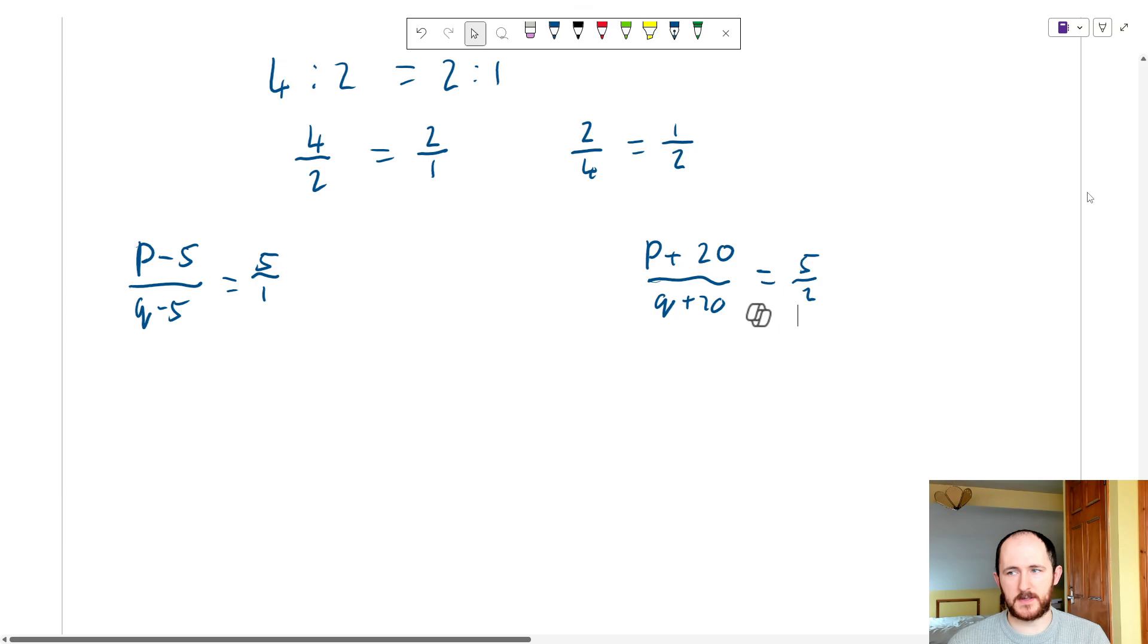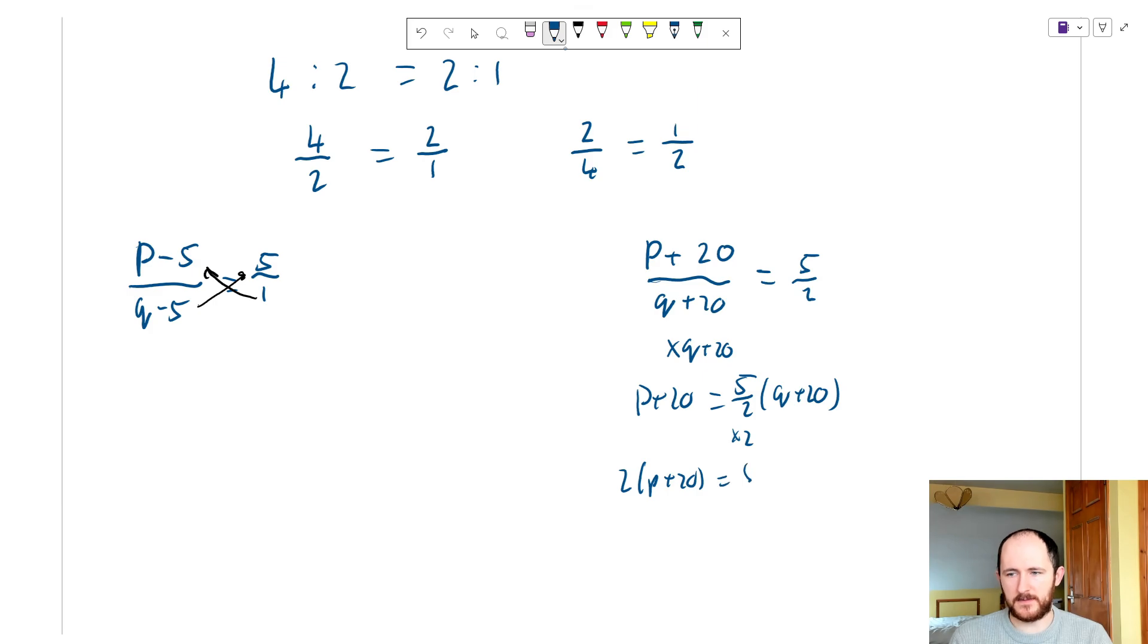Now we have two equations and two unknowns so we're going to be doing simultaneous equations. The first thing I would do is cross multiply. So here we get p plus 20 equals 5 over 2 times q plus 20, and then times both sides by 2 you get 2 times p plus 20 equals 5 times q plus 20. If you look that is the same as if I just cross multiplied them. So here I get p minus 5 equals 5 times q minus 5.